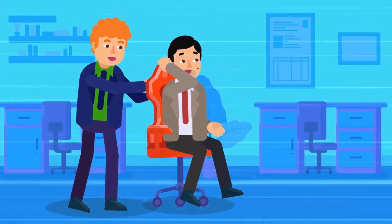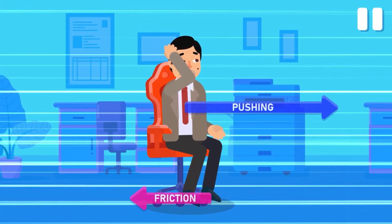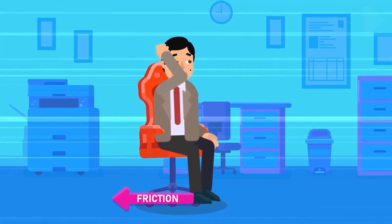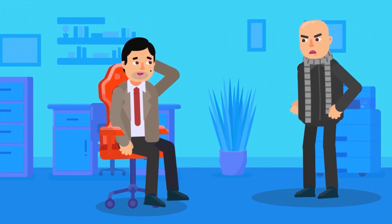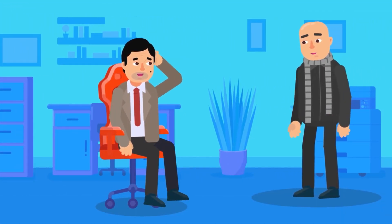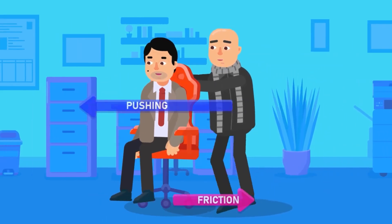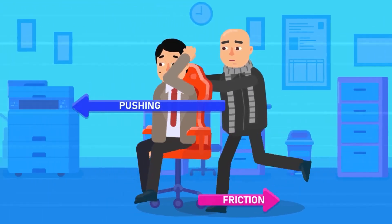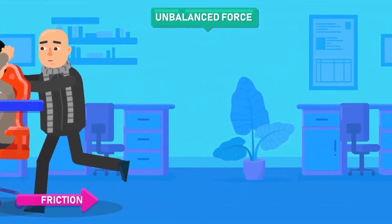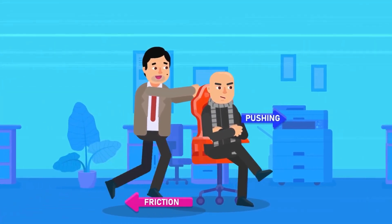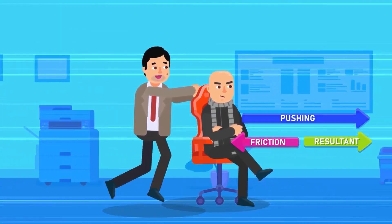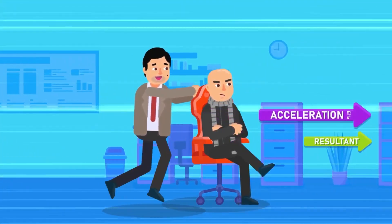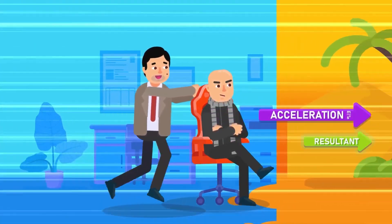Two, when the push is removed, then the force acting on the chair is only the friction, which will decelerate the chair and the chair will eventually come to a stop. If the resultant force acting on an object is not zero, we say the forces are unbalanced. When there is a resultant force acting on an object, the object will accelerate in the direction of the resultant force.